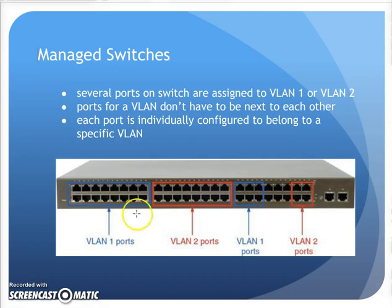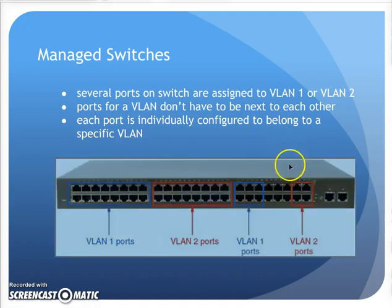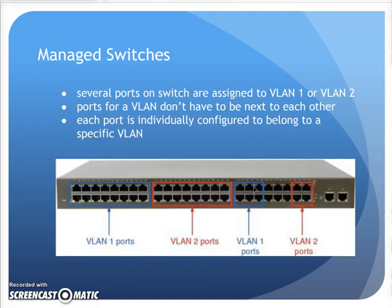I can have ports assigned to VLAN 1 and ports assigned to VLAN 2 scattered all over the switch — it doesn't matter. That's why these are called logical, virtual local area networks. They don't need to be all these ports grouped here and only those ports there; they can be scattered throughout the switch. As long as I identify them, the switch will know to let these ports here talk to these ports here — all VLAN 1.